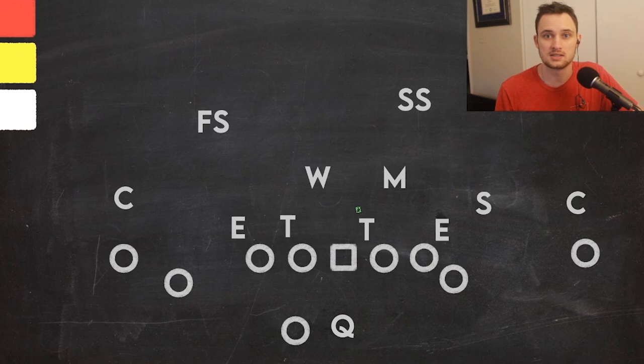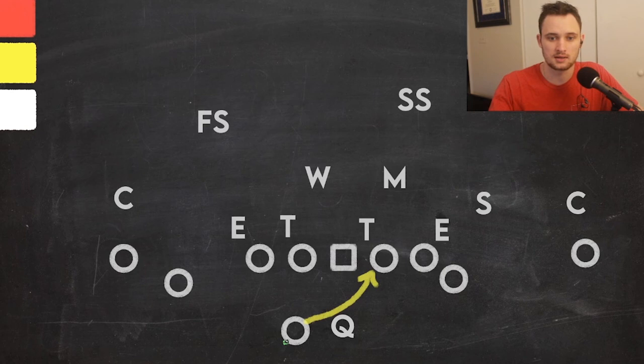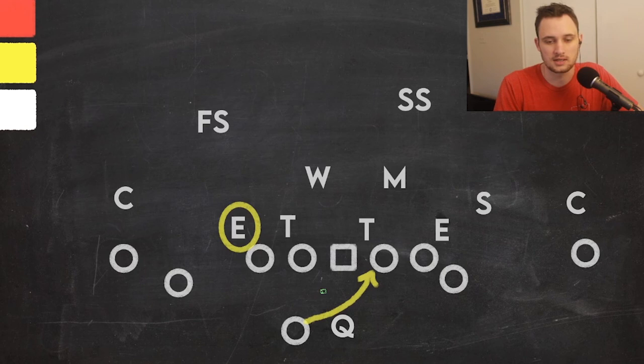To give you an impression of what I mean, the read option, or zone read if it's zone blocking, works like this: the running back takes an inside zone step towards the guard-tackle area, and the quarterback reads the outside end to determine if he's going to give the ball to the running back or keep it himself.